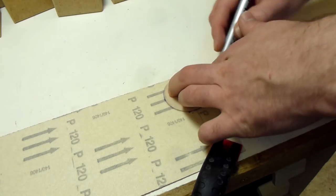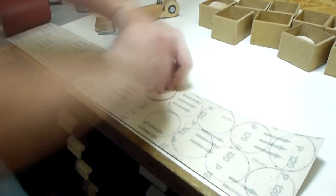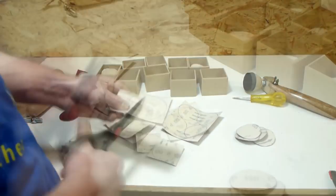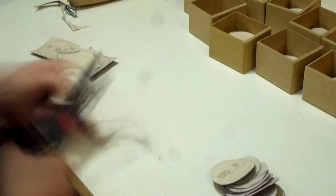Unfortunately I could only find these rolls from 60 to 180 grit. So the higher grits I had to buy as premade discs. Cutting them out takes some time but will save you a lot of money.